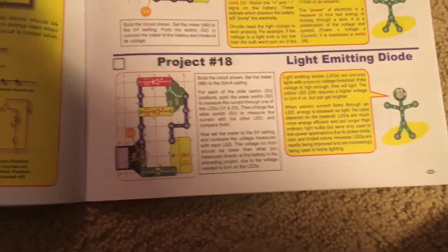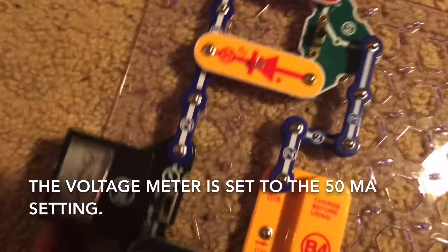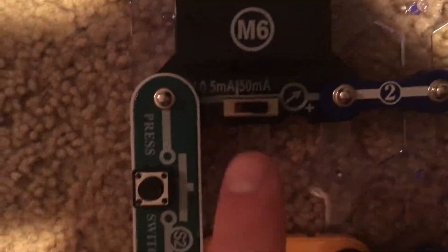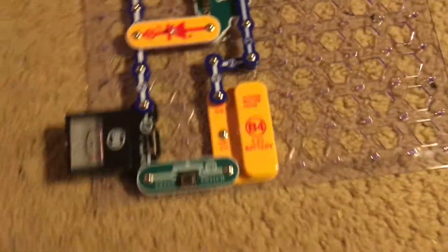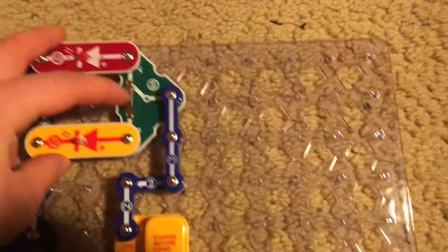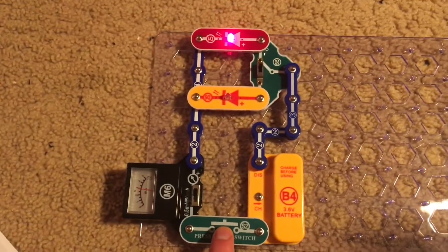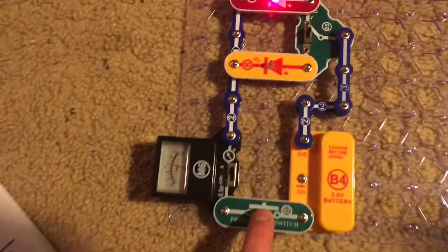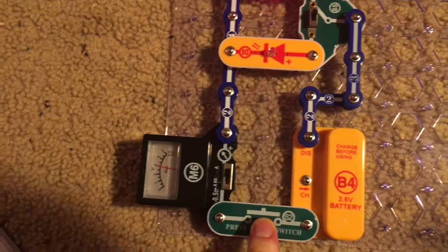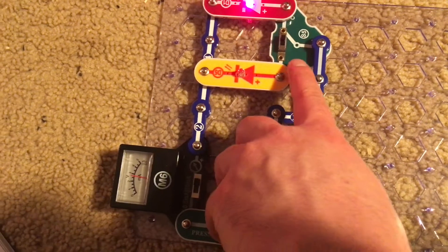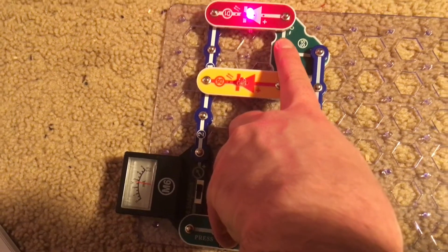Project 18, light emitting diode. For this project, we are going to set the voltage meter on the 50 milliamp setting, and we will have the slide switch set to the C position. When we push the press switch, the red LED will light. In addition, the voltage meter will read close to 30 milliamps.